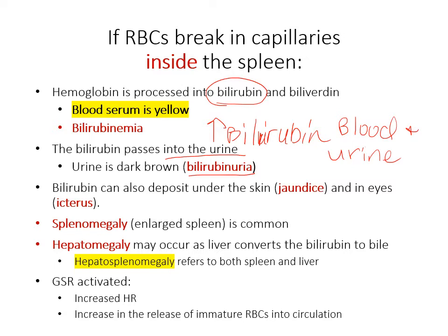The urine becomes dark brown. One thing to note is that the blood serum is yellow, which is normal for blood serum, because the red blood cells are breaking inside the spleen. Bilirubin can also deposit under the skin, causing jaundice, and in the eyes, which is called icterus. Because of all this extra bilirubin in your circulatory system, it can be deposited at various places in your body.